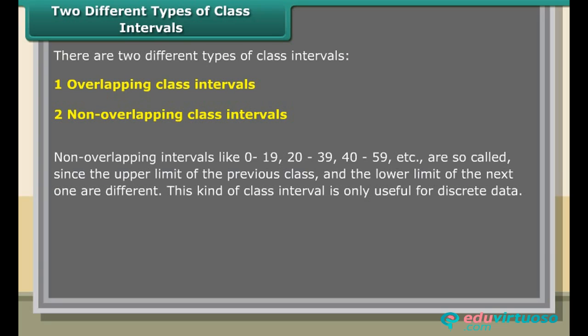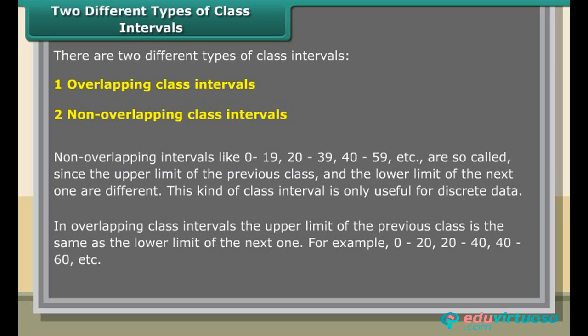In overlapping class intervals, the upper limit of the previous class is the same as the lower limit of the next one. For example: 0 to 20, 40 to 60, etc.